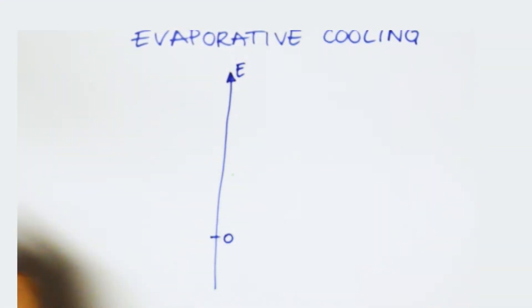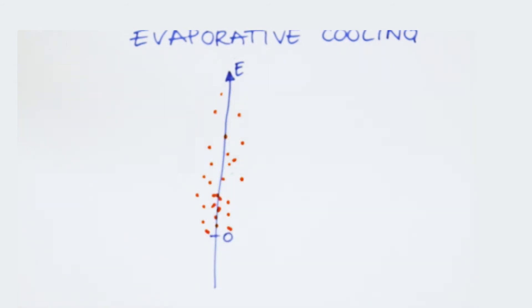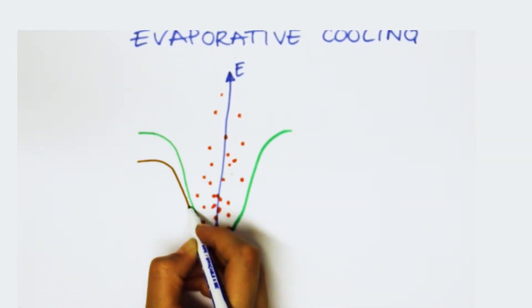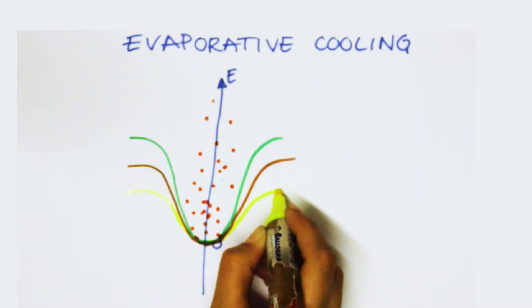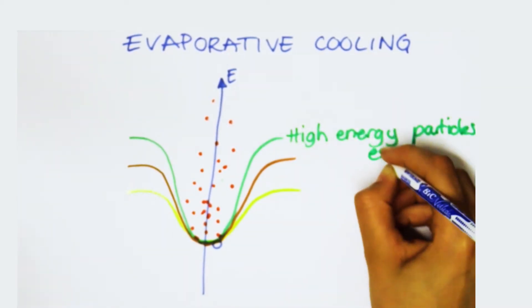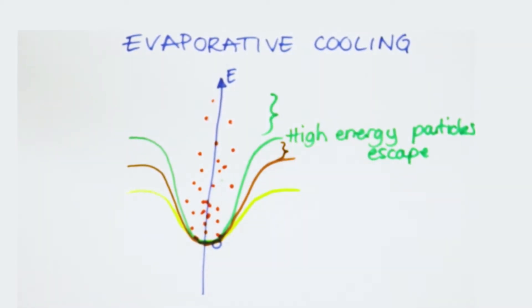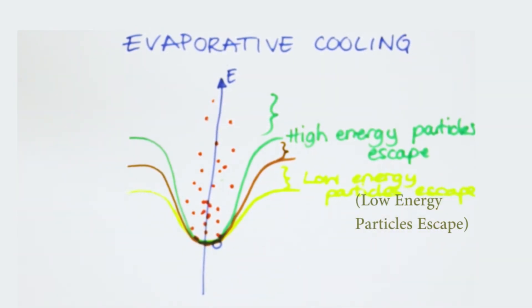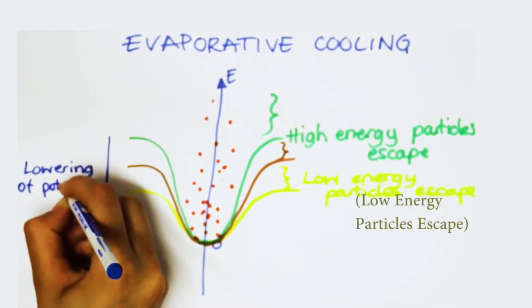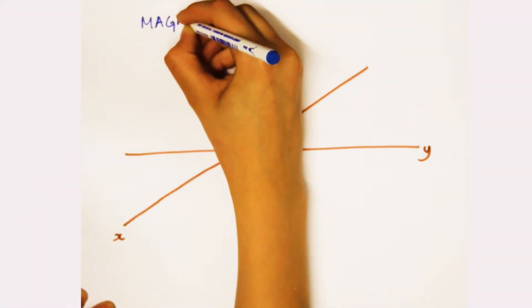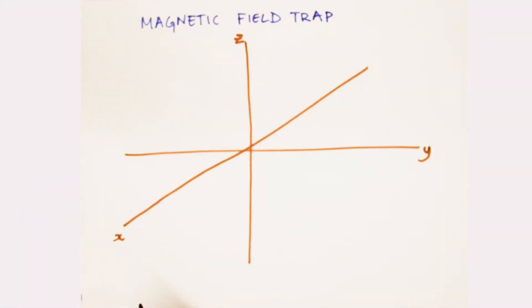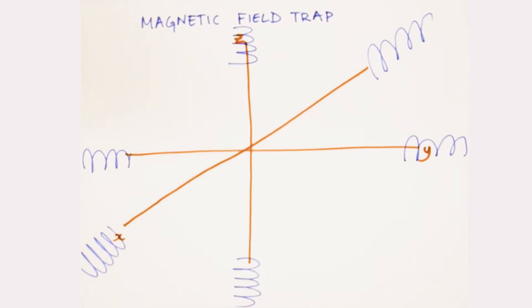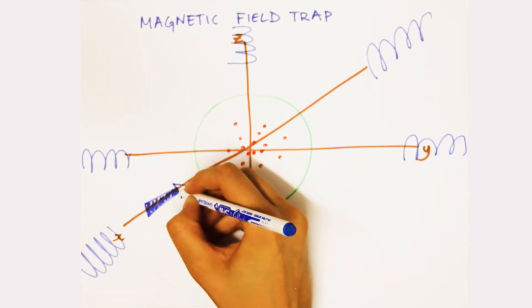The rubidium atom can be cooled down to about one thousandth of a degree above absolute zero. There are two further stages of cooling to get the nanoKelvin temperatures needed to form the Bose-Einstein condensate. Both are forms of evaporative cooling, in which the hottest atoms escape, leaving the coldest atoms in the trap. In the final stage, a quadrupole magnetic field is used to trap the atoms, with a radio frequency pulse used to excite the hot atoms to a different unbound spin state that then escape the trap.